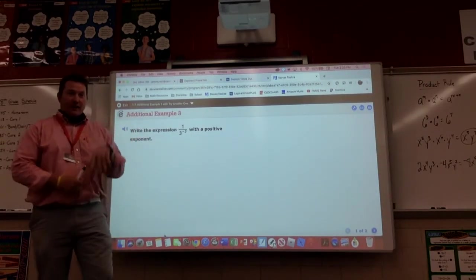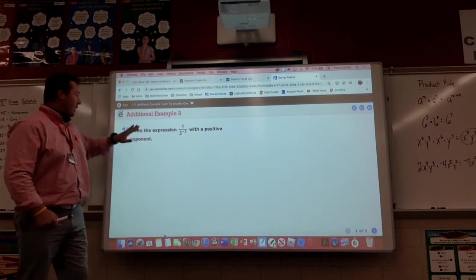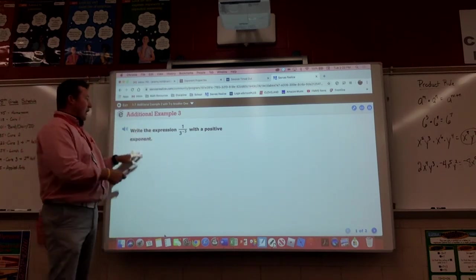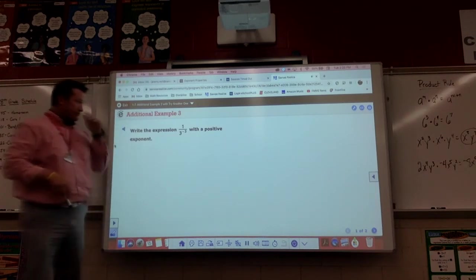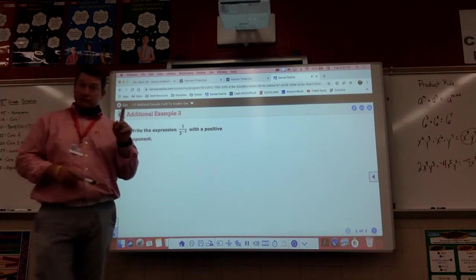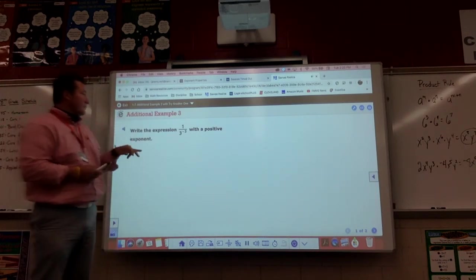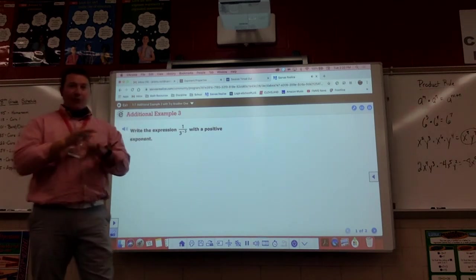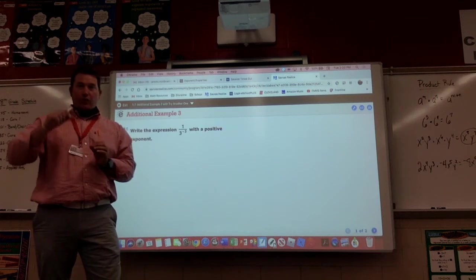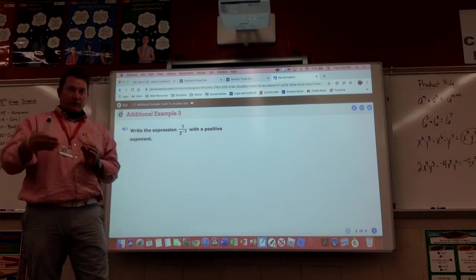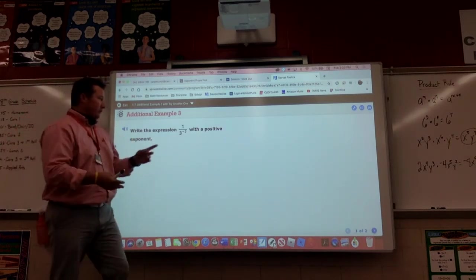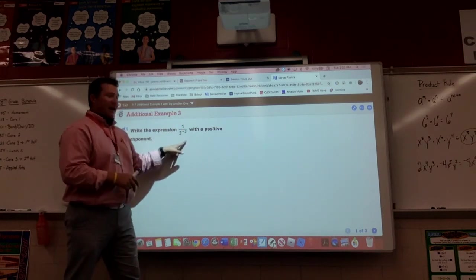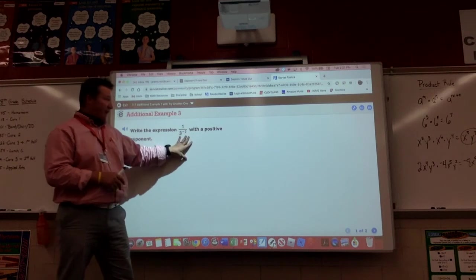Like magic, I'm back folks. We're on to example three. So example three, kind of a carryover from example number two. Here's what we're dealing with. Write the expression one divided by three to the negative three power with a positive exponent. So if you haven't figured it out, we do not like negative exponents. So we want to write our answers with positive powers. This guy's all negative, kind of like Mr. Knoll. Negative Knoll we call him. So we got to make this guy positive. How are we going to do that?